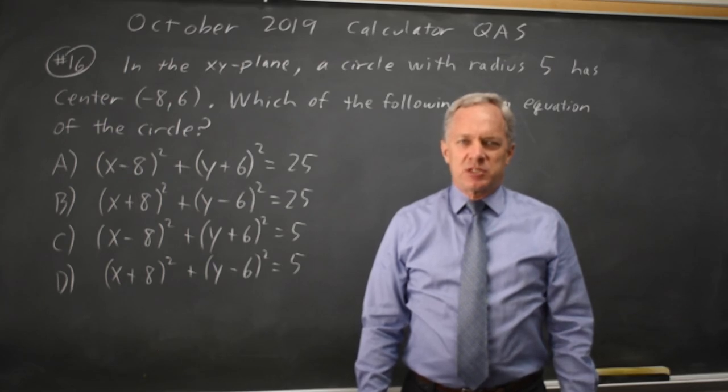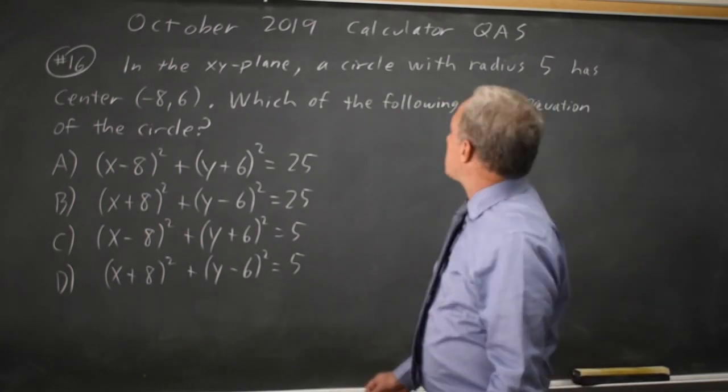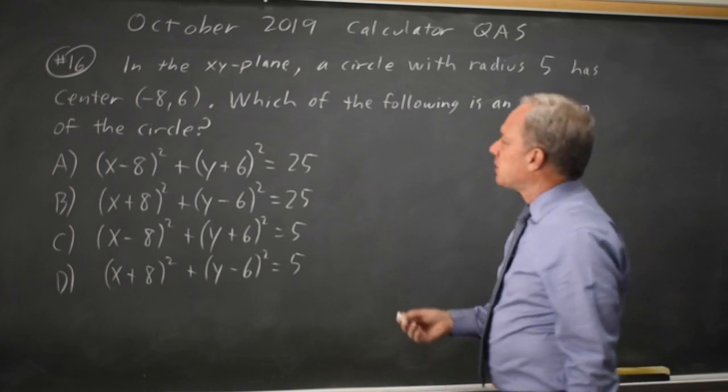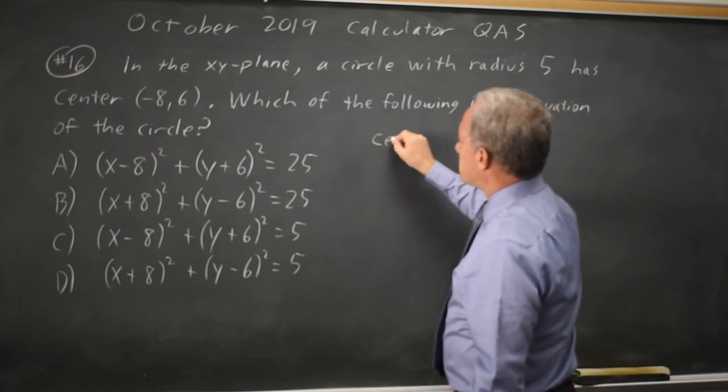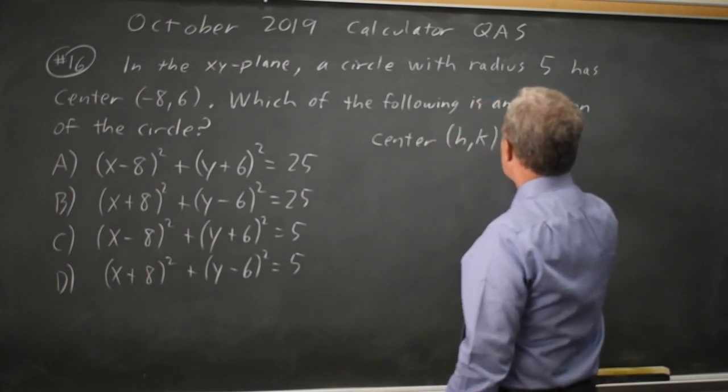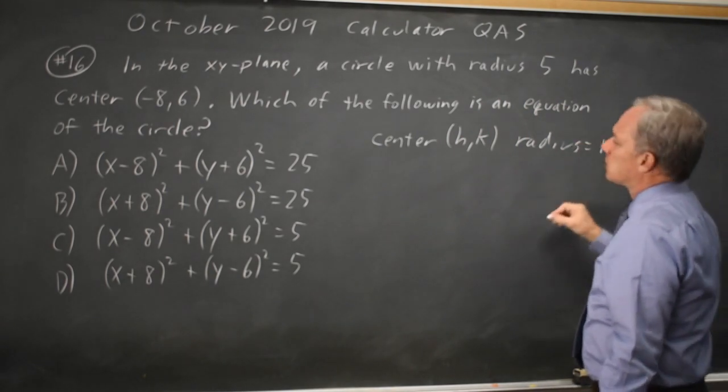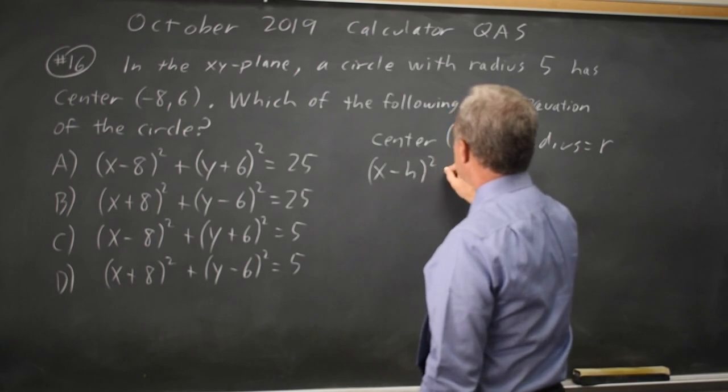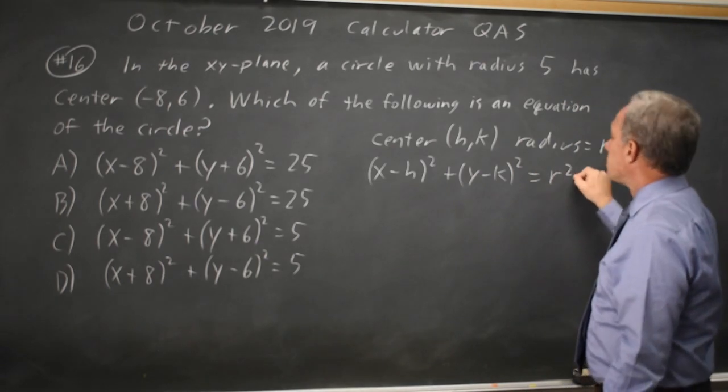This is question 16. The College Board is asking about the equation of a circle, as they usually do, and they give you the coordinates of the center and ask for the radius. I always write down to avoid getting lost: given center (h,k) and radius r, my equation is (x-h)² + (y-k)² = r².